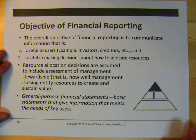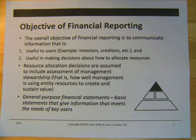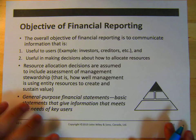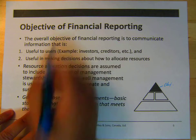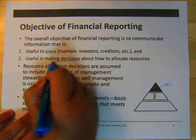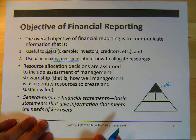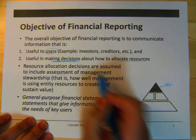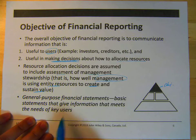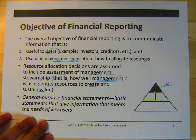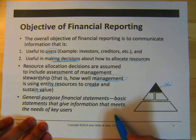On slide 6 — and remember, you can always pause this to read the slide and then go on — the overall objective of financial reporting is to communicate information that's useful to users and useful in making decisions on how to allocate resources. Resource allocation decisions are assumed to include assessment of management stewardship — that is, how management is using the entity's resources to create and sustain value. Management stewardship is a big deal for shareholders and investors. General purpose financial statements are the basic statements that give information meeting the needs of key users.